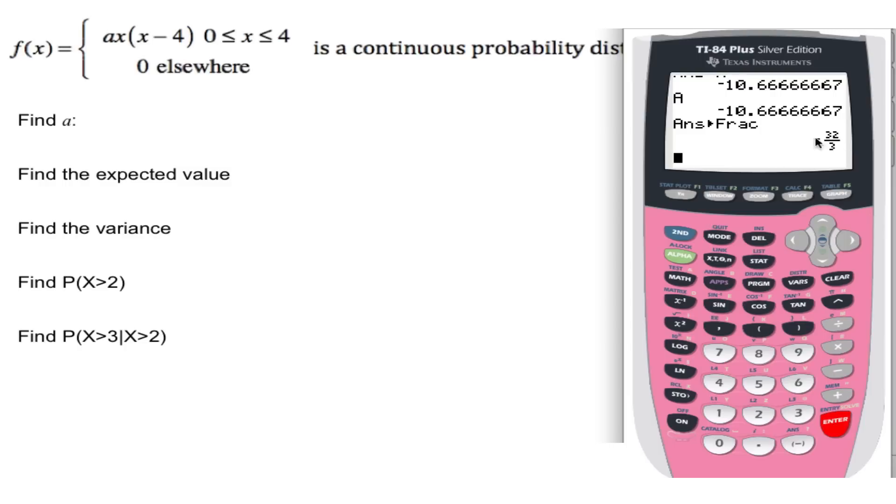So what am I going to multiply, this is the area, what am I going to multiply this area by so that the area is 1? Well, it should be obvious that you're going to multiply by negative 3 over 32, just do the reciprocal. So now I'm going to go up to y, I'm going to insert negative 3 over 32, there's my function.